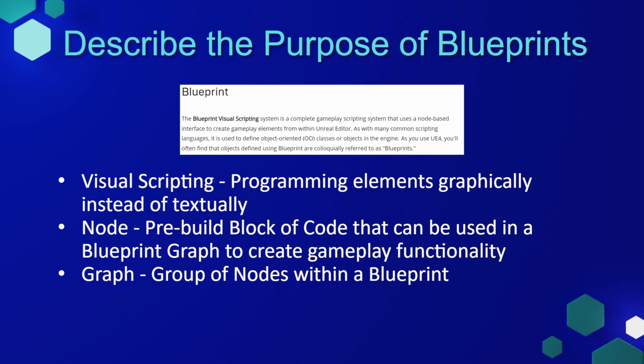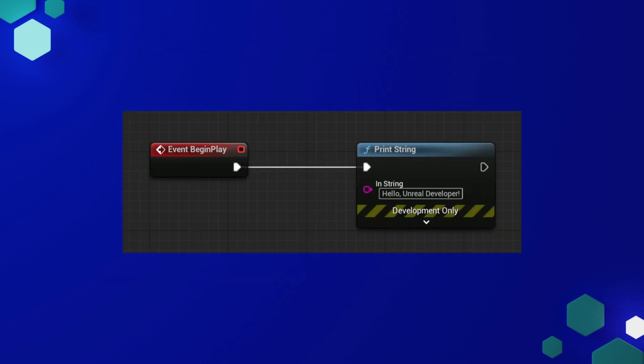Let's define some of these terms. Visual scripting is programming elements graphically instead of textually, and you do this using nodes. A node is a pre-built block of code that can be used in a Blueprint graph to create gameplay functionality. A graph is a group of nodes within a Blueprint. Here we can see a very basic implementation of a Blueprint graph, which has an event node on the left, and on the right a print string node, which will print something to the user's screen.